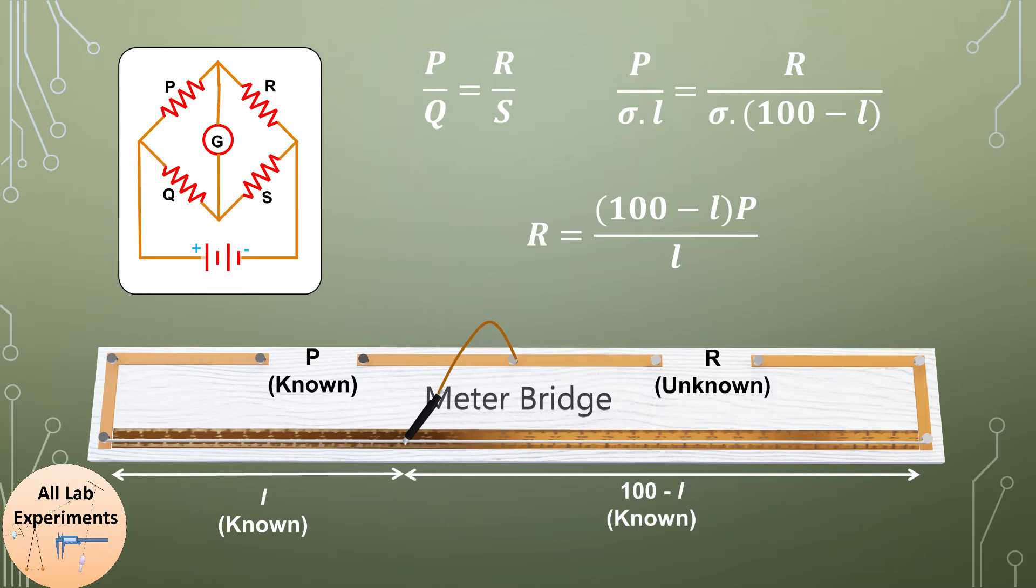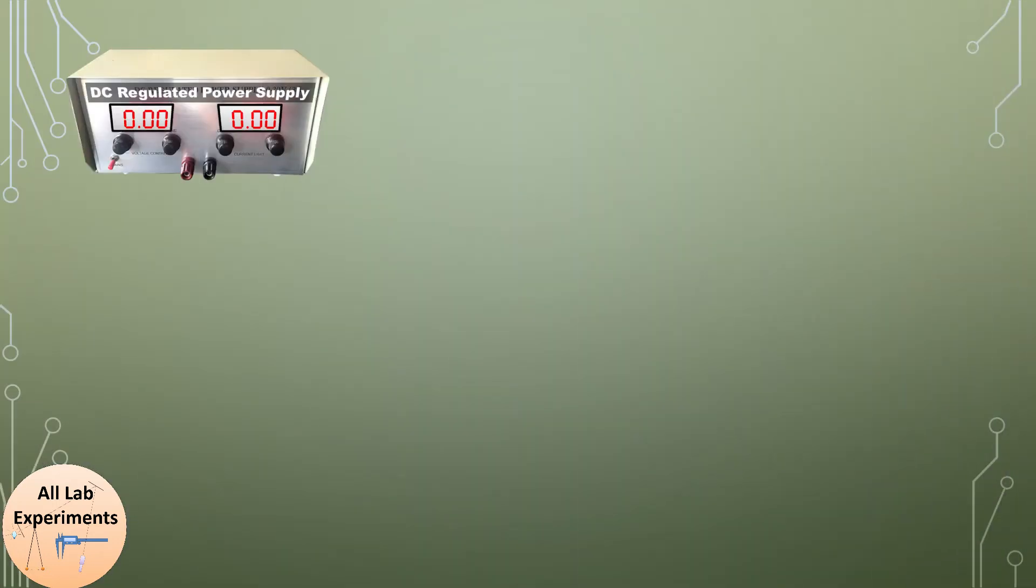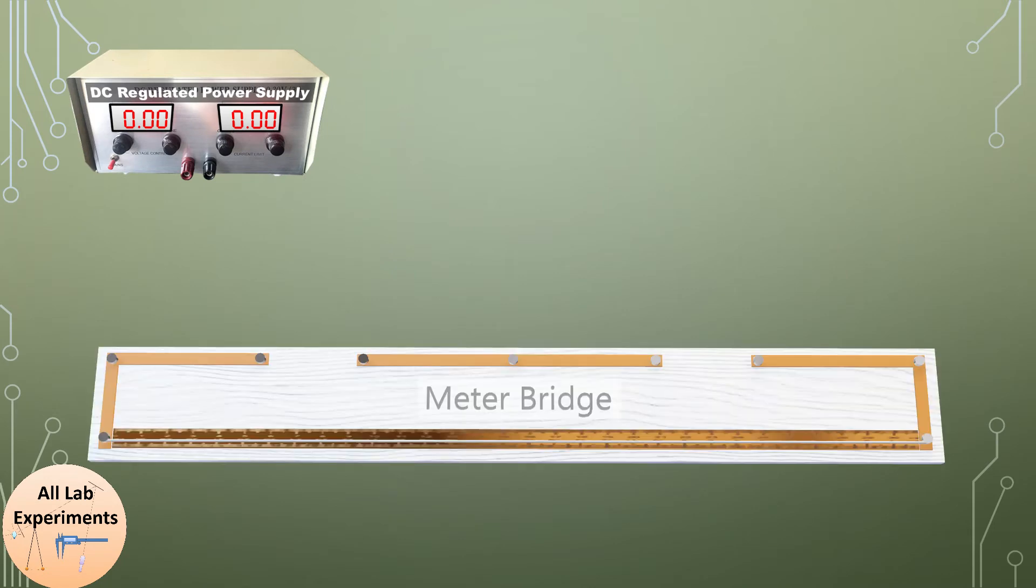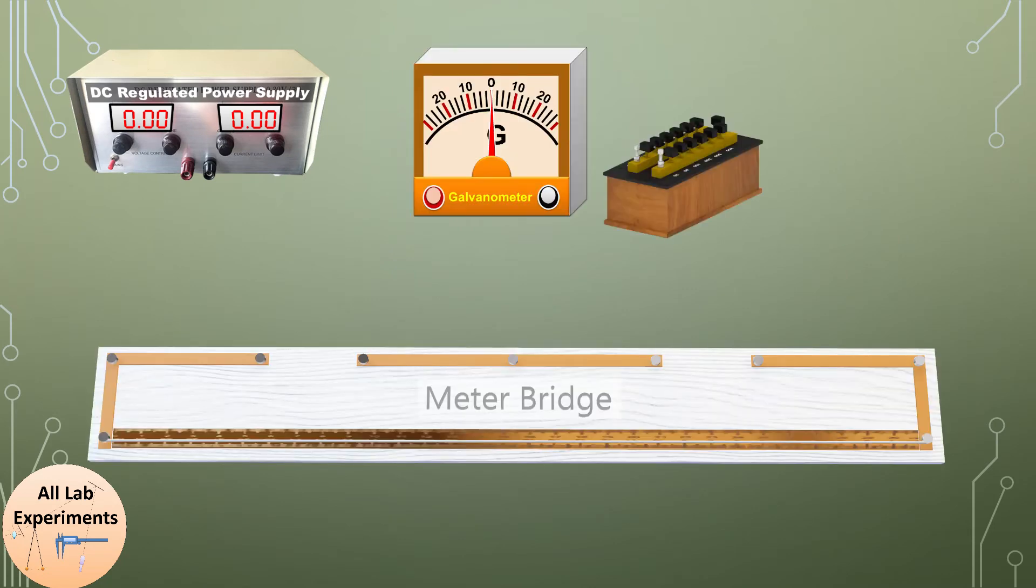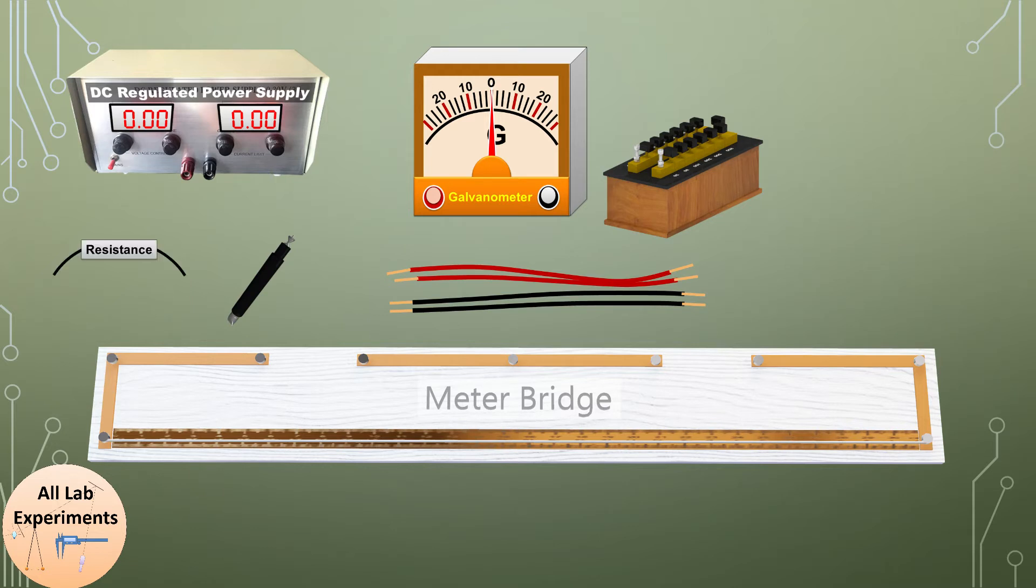Now let us start this experiment. To conduct this experiment we need a regulated power supply, a meter bridge, a galvanometer, a resistance box, some connecting wires, a jockey, and an unknown resistance. Here is the circuit diagram we need to make to conduct this experiment.